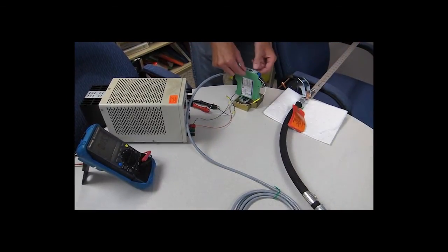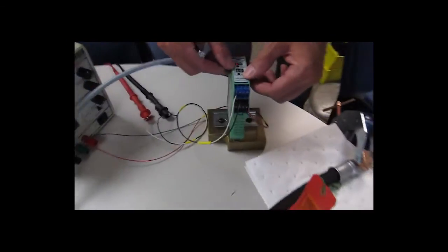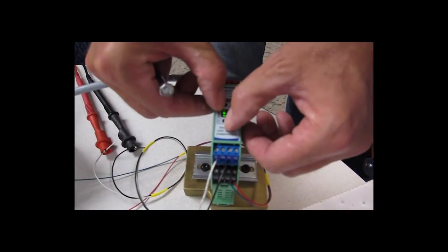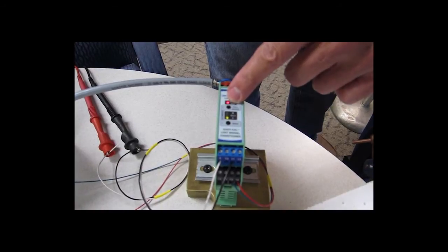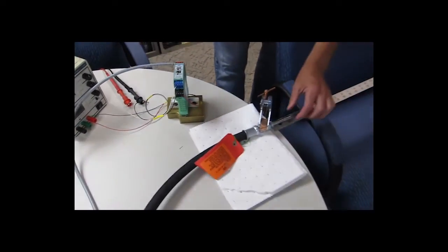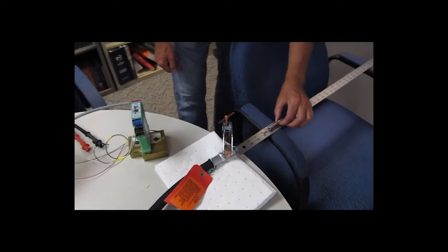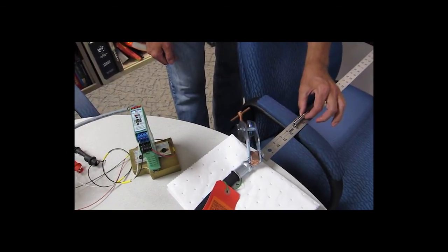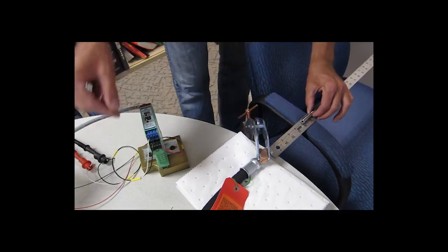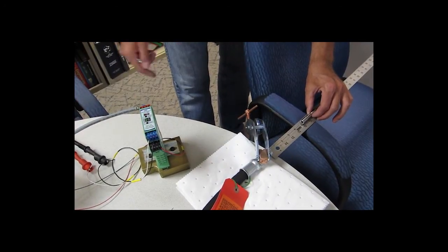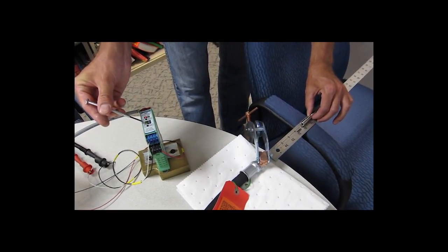So again, we'll put the signal conditioner into calibration mode by pushing both buttons until we get a blinking LED. Let us say that the application is fully zero or fully retracted at five inches. So we'll move it to five inches and press zero. And we'll wait for these LEDs to stop flashing.